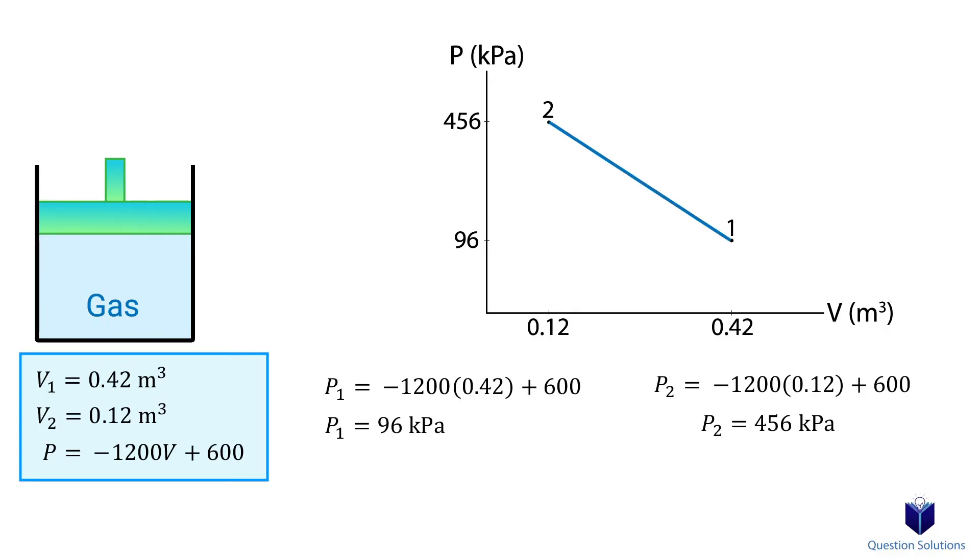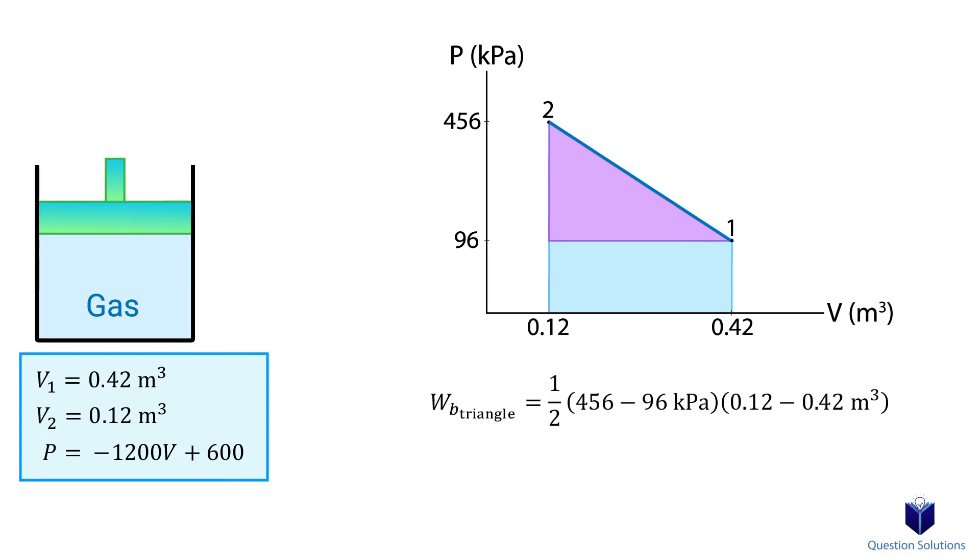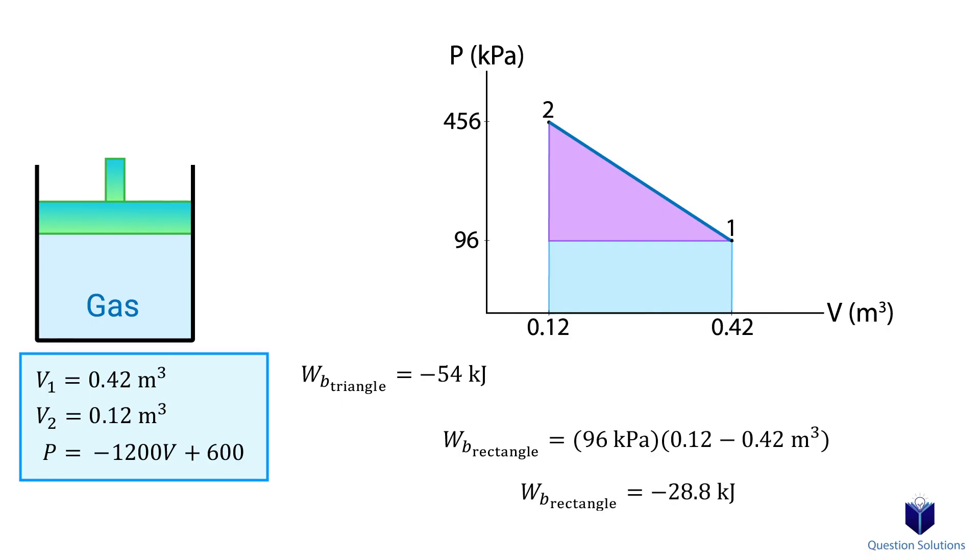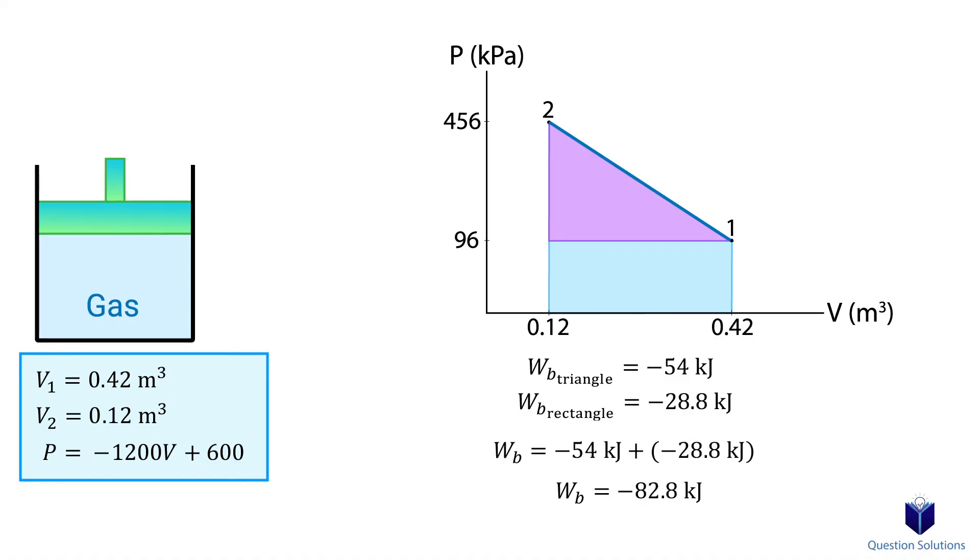Let's connect the dots. To find the work, we need to calculate the area under the graph. We have two pieces, a right angle triangle and a rectangle. The area of a right angle triangle is half times base times height. So the height is P2 minus P1. The base length is V2 minus V1. And solving gives us the area of the triangle piece. Now the bottom part is a rectangle, so it's just base times height. The height is P1 and the base is V2 minus V1. The total work is then the addition of these two pieces. We get a negative value, which simply means that this is a compression process. And work is being done on the system, so work input.